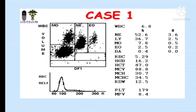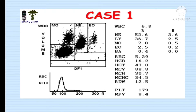Here you can see the WBC count — the white blood cells are 6.8, while HGB is 16.2, and hematocrit (HCT) is 47.0. Now if you look at the MCH and MCHC values, you can easily analyze whether they lie in the normal ranges or not. Analyze this case and give me your answer in the comment box — is this a normal case or not?